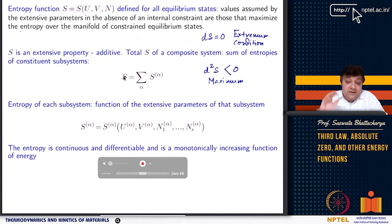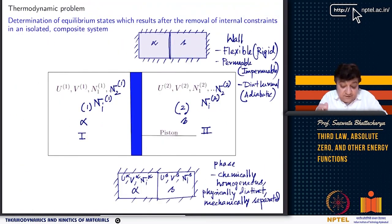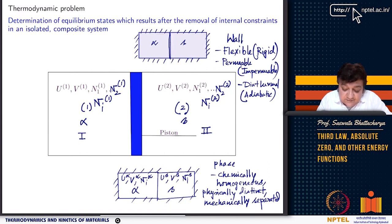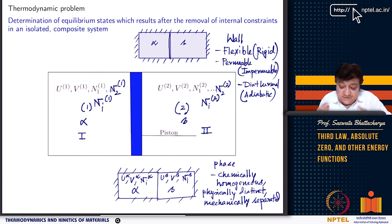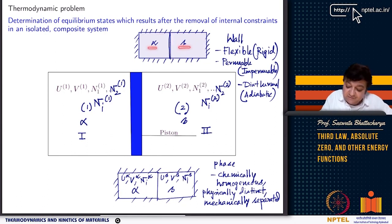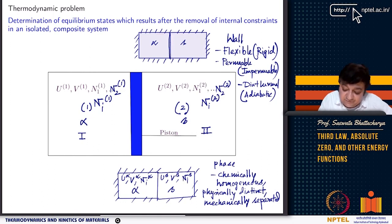In the previous lecture, we looked at the thermodynamic problem: we defined it as becoming equivalent states of an isolated composite system containing several subsystems separated by walls. It is an isolated composite system — it cannot exchange matter and energy with the surroundings. The system contains subsystems like alpha and beta, separated by a wall. The wall initially has internal constraints such as rigidity, impermeability, and adiabatic — meaning it does not allow heat transfer. Then if you remove these internal constraints, you want to see what the equilibrium states will be, and how the equilibrium state of alpha and beta will be defined.